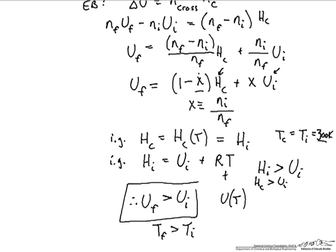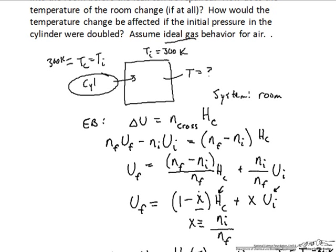We could have arrived at this without all the math. The gas coming in has to push against the gas already in the room, doing work on it to make its way in. By doing that work on the gas in the room, it adds energy into the room, which — in this insulated room — manifests as an increase in temperature of the ideal gas. Because work is being done on the system, the temperature of the gas in the room has to go up.